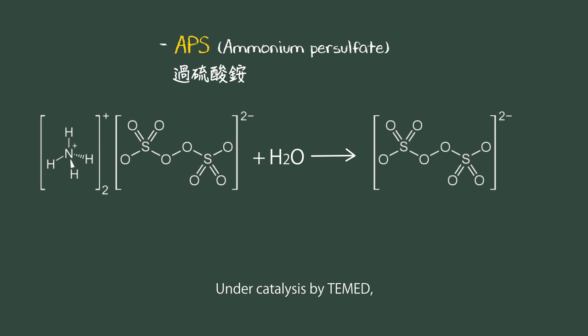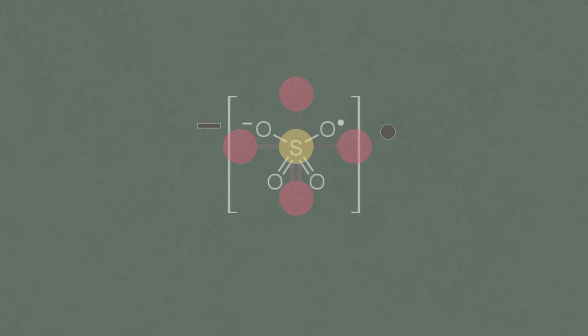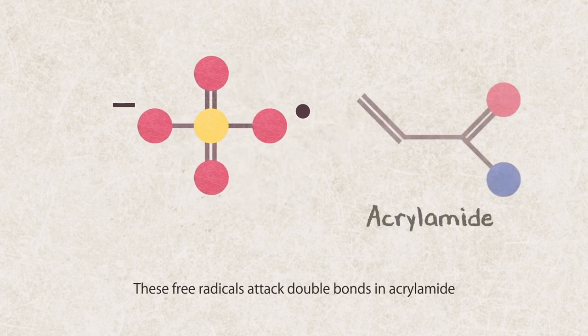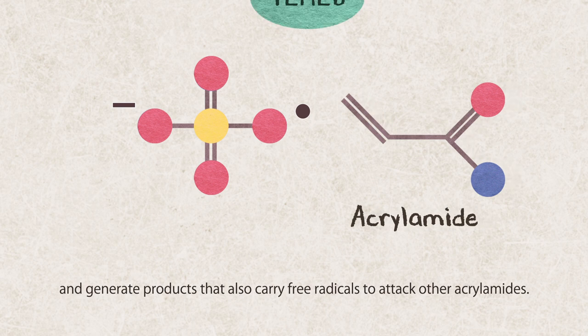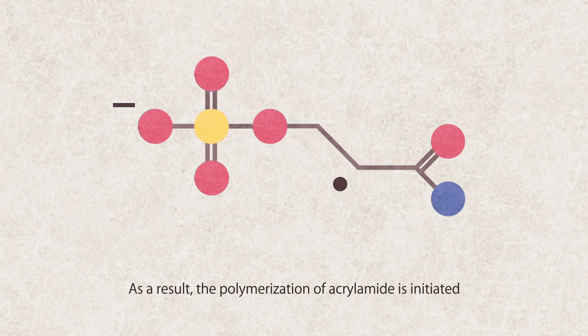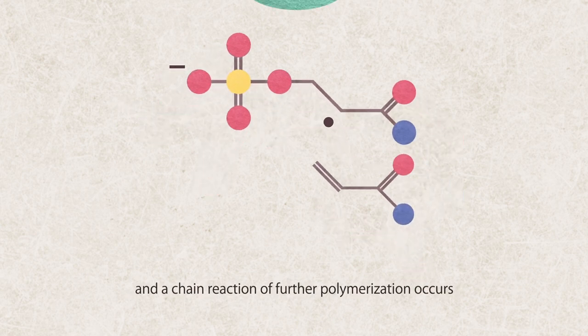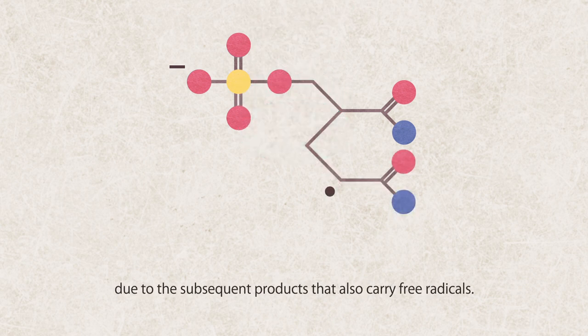Under catalysis by TEMED, APS generates stable SO4 free radicals when dissolved in water. These free radicals attack double bonds in acrylamide and generate products that also carry free radicals to attack other acrylamides. As a result, the polymerization of acrylamide is initiated and a chain reaction of further polymerization occurs.